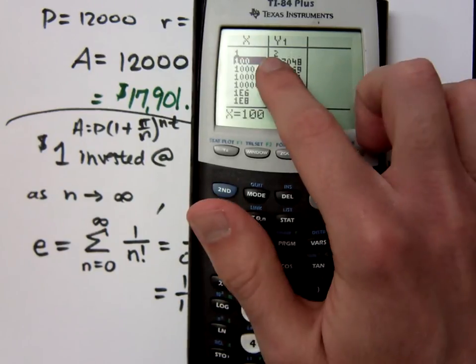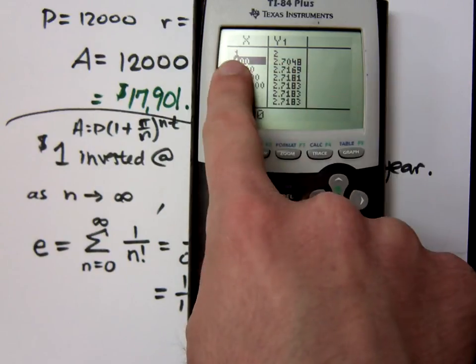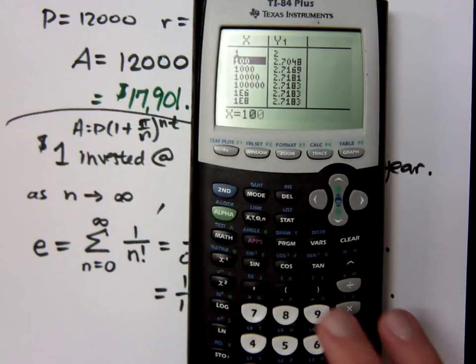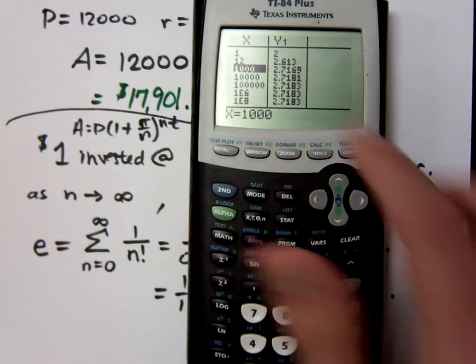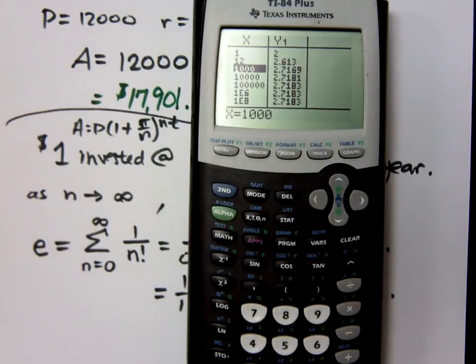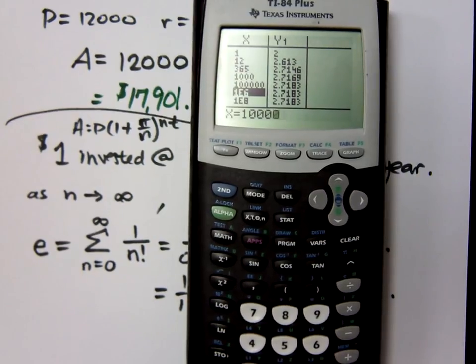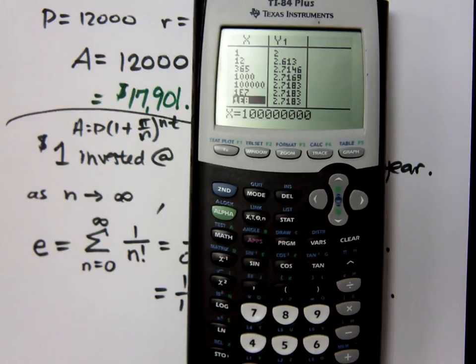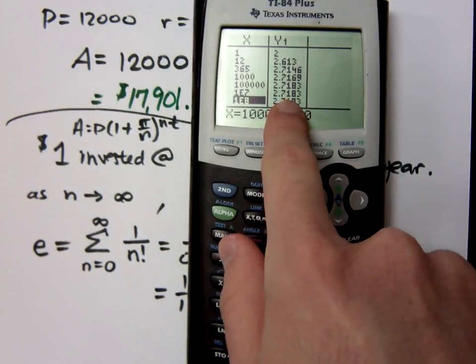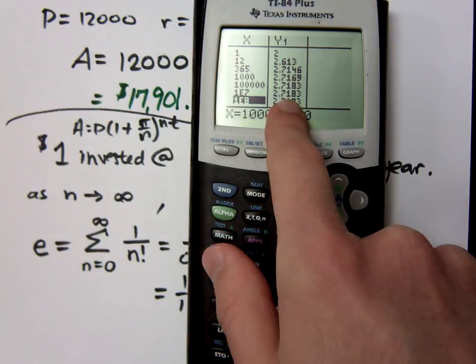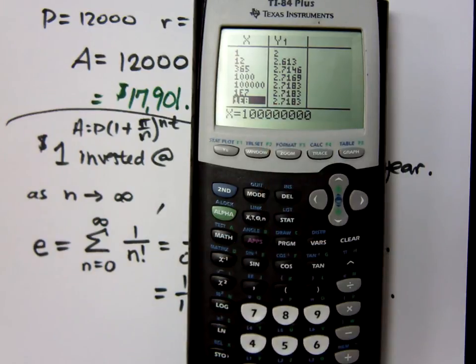In 1 year, you'd have $2. Or, not 1 year, but if you did 1 time a year, you'd get $2. If you did this monthly, you'd have $2.61. If you did it every day. If you did it 1,000 times in a year. 10,000 times. And so on. They start to approach a particular value, which is E. Hooray limits and hooray calculus. Hooray.